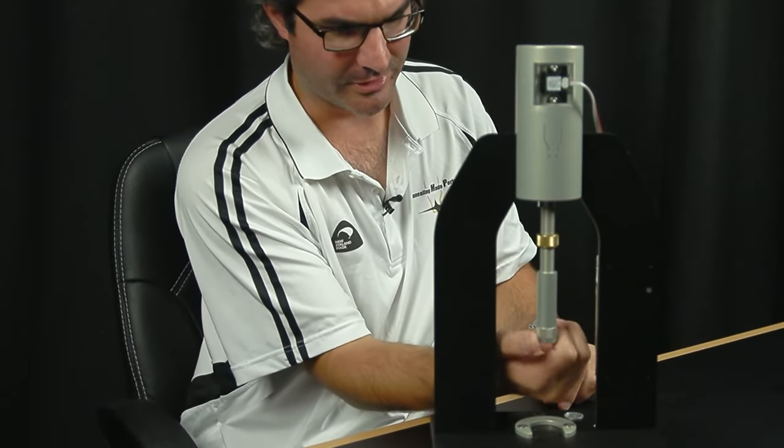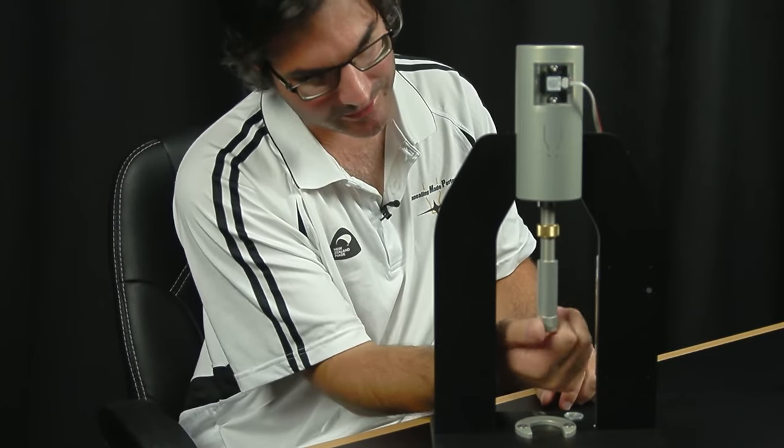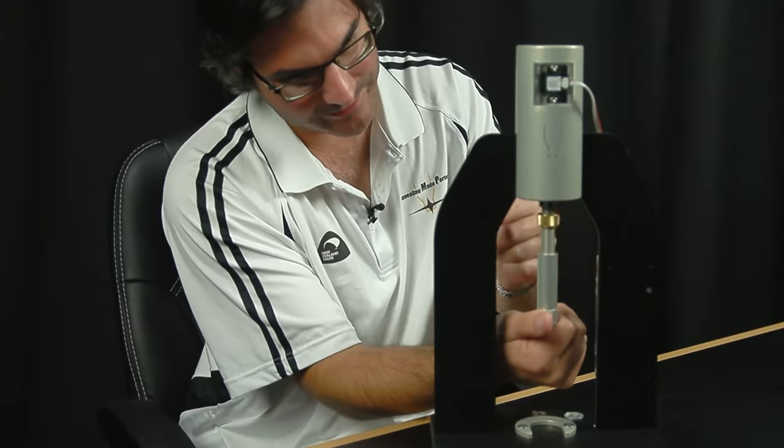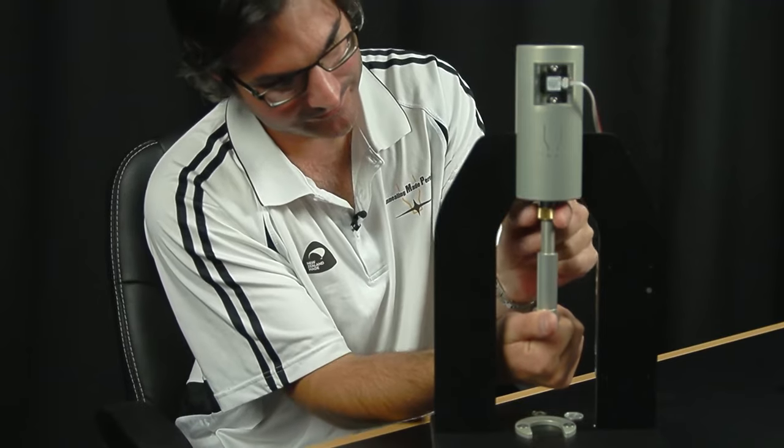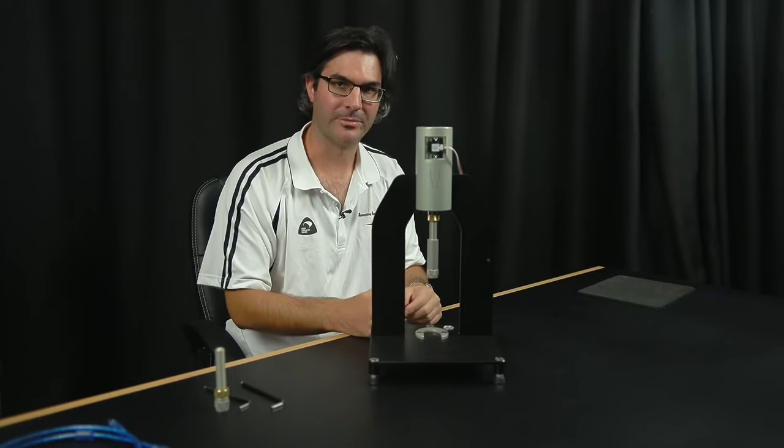Screw it in roughly halfway for now. That'll be pretty close for the majority of dies. You can lock the lock nut in place. That concludes the assembly of the press. Now let's have a look at the software.